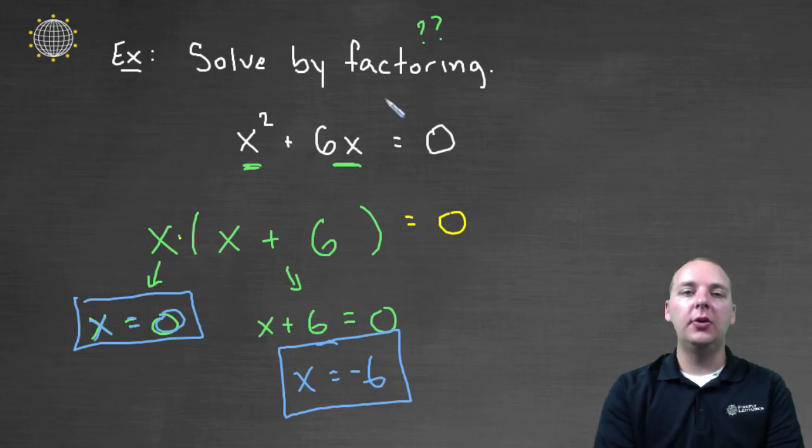Just remember, if you only have two terms, you can look at factoring by pulling out a common factor, and you've got your factorization. Then you'll set each of those individual factors equal to zero to get your final answer.